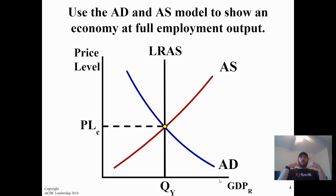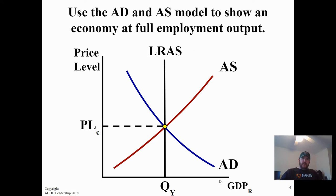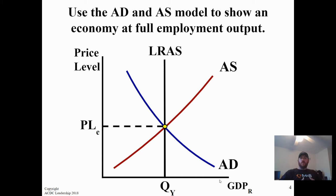Aggregate demand is just the components of GDP. Short-run aggregate supply is the supply of all goods and services currently in our economy. What differentiates the short run from the long run is that in the short run, wages and resource prices are sticky due to contracts — they don't fluctuate as quickly as price level. The long-run aggregate supply curve represents potential output at full employment, which we label Q sub Y or Y sub F — where unemployment is in that four to six percent range.